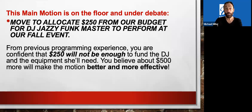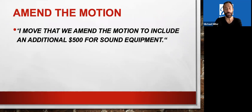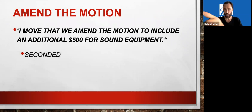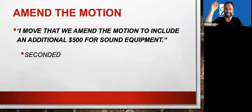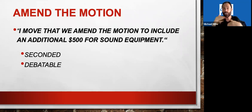We can change this motion to make it better. What can you do? Very simply, you can amend the motion. In other words, you can move the following: I move that we amend the motion to include an additional $500 for sound equipment. The minute you raise your hand, get recognized, and make this motion, it must be seconded. So the person presiding at the meeting will say: there's a motion to amend on the floor. Is there a second? Someone seconds it, and now it gets fully debated. What we're debating now is not the main motion — the $250 — but should we change it to include an additional $500.